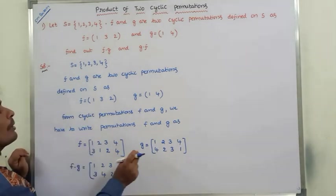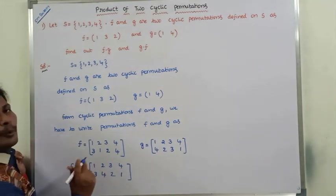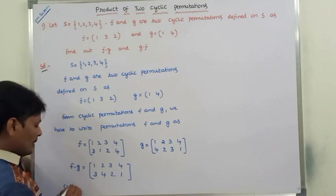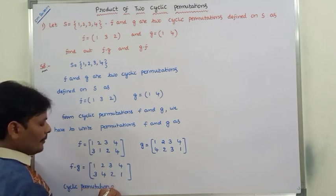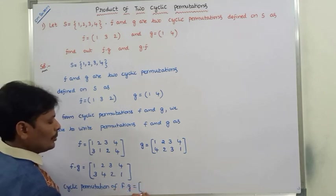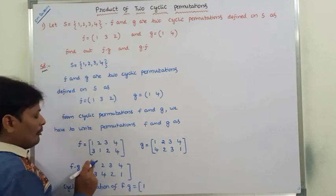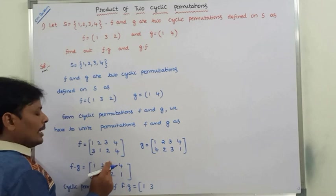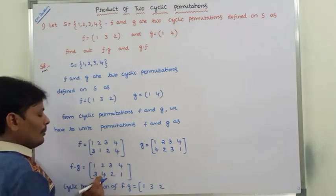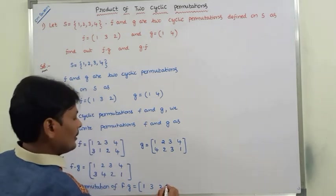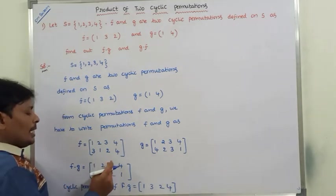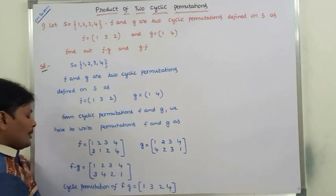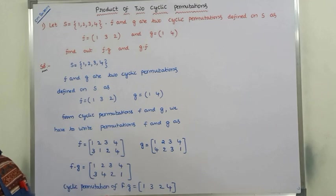So we have the product permutation F∘G. From this product, we write the cyclic permutation form: starting with element 1 — 1's image is 3, 3's image is 2, 2's image is 4, 4's image is 1. Therefore, the cyclic permutation of F∘G is (1, 3, 2, 4).